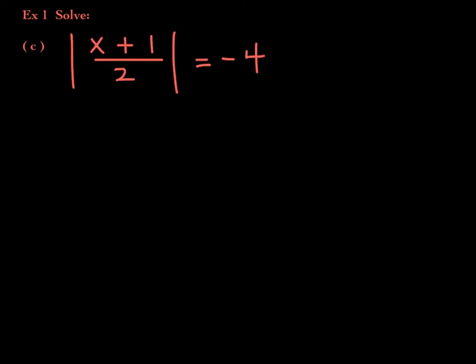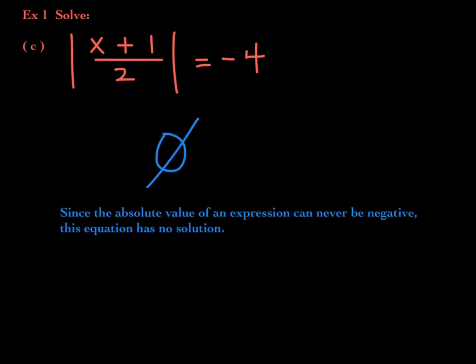The absolute value of x plus 1/2 is equal to negative 4. Wait — we said earlier that the absolute value of an expression is its distance from 0, and distance cannot be negative. Therefore, the absolute value of any expression can never be negative, so this equation has no solution. If ever your absolute value equation is set equal to a negative number, your answer is no solution.